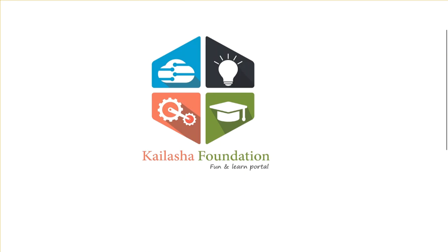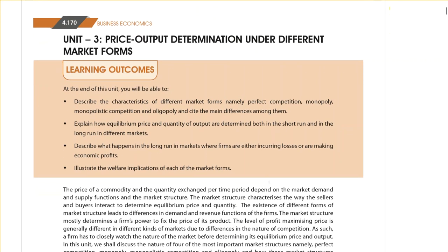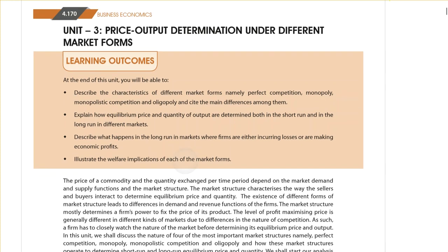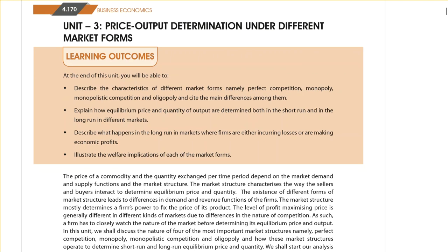Hello and welcome to Kalasha Foundation. Today we will be discussing Business Economics Chapter 4, Unit 3, which is price-output determination under different market forms. We have been discussing all types of markets and we discussed price discrimination there also, but as I told you in the earlier video, they have not told you everything about the markets in the second chapter. So they have explained it in another chapter, making it a different chapter — that is price-output determination.